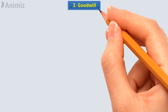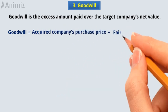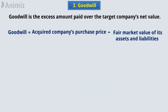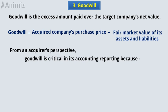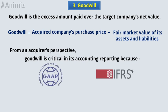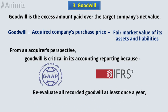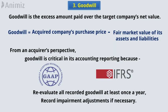Number 3: Goodwill. Basically, goodwill is the excess amount paid over the target company's net value. It's the difference between an acquired company's purchase price and the fair market value of its assets and liabilities. From an acquirer's perspective, goodwill is critical in its accounting reporting, because both US GAAP and IFRS require a company to re-evaluate all recorded goodwill at least once a year, and record impairment adjustments if necessary.